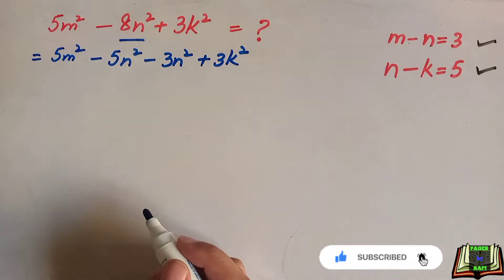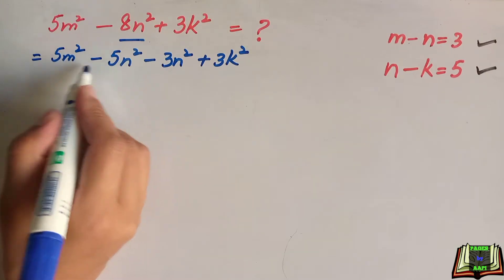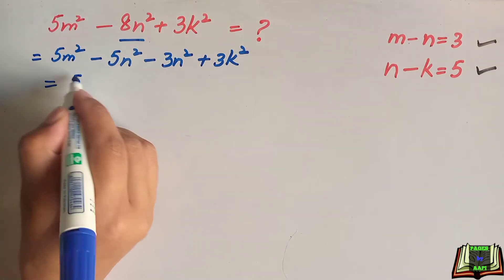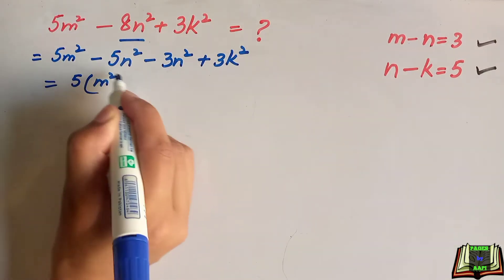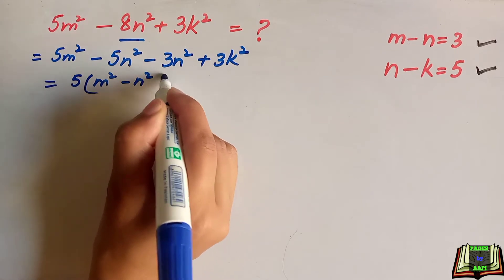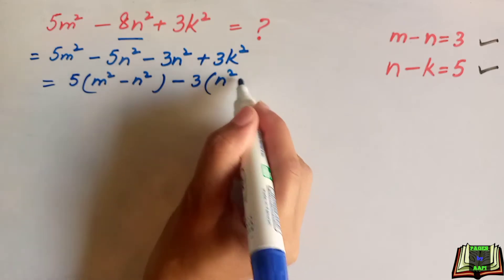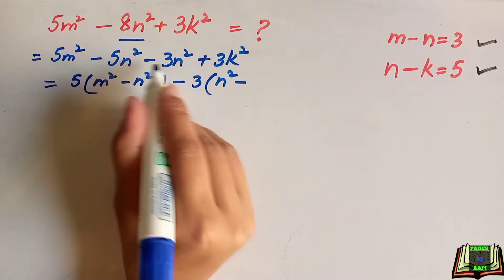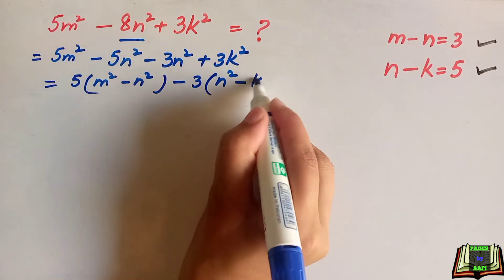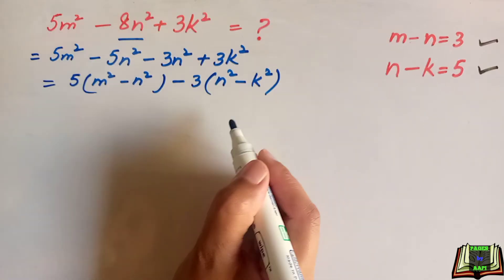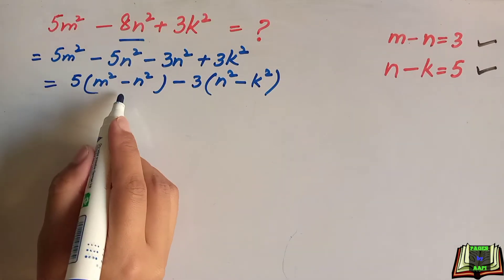Now in the next step, there are a few common values. In the first two terms, we will take 5 as common, and in bracket we got m² - n². In the next, minus 3 as common, and in bracket we got n² - k². Whenever we are taking minus as common, the inner sign will be changed—plus will be changed into minus.